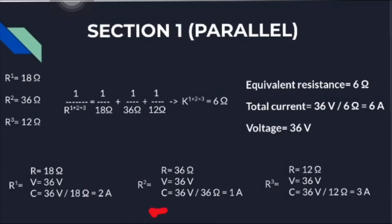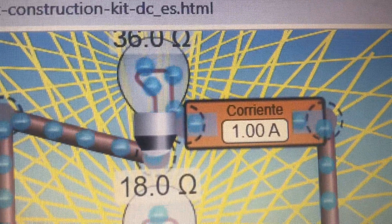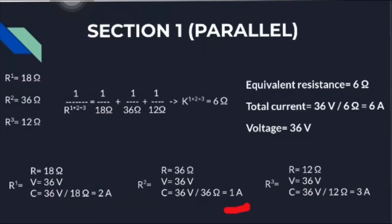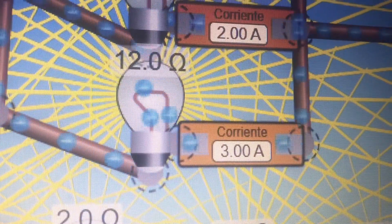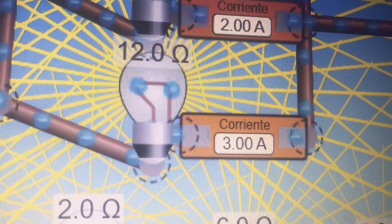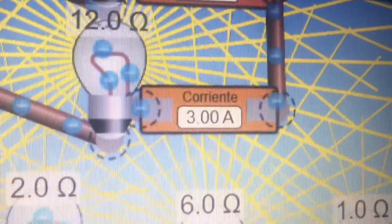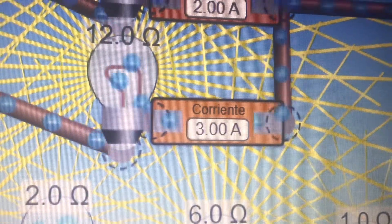For the second resistance we divide 36 volts by 36 ohms, which gives us 1 ampere — matching our calculations. For the third resistance, dividing 36 volts by 12 ohms gives us 3 amperes. The simulation of the 12-ohm resistance also matches with a current of 3 amperes.